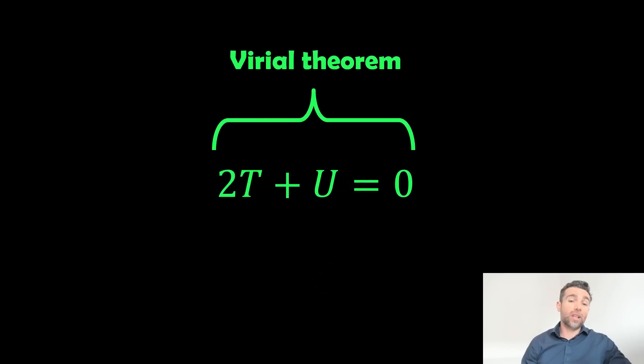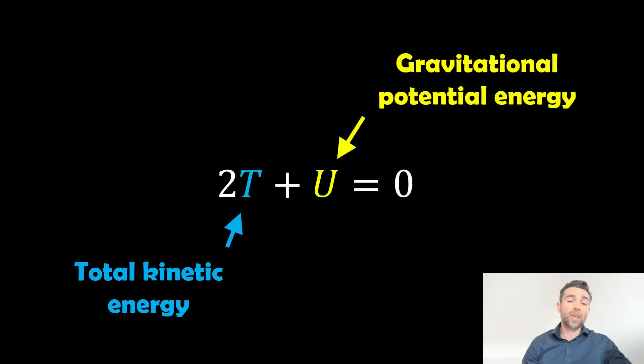So what does it look like? So the Virial Theorem is stated like this for astrophysics. So it will be two times the kinetic energy plus the gravitational potential energy is equal to zero. So that's how it would typically be written. So just to point out there, you've got your total kinetic energy of the system, so that's your T, you've then got your gravitational potential energy, that's your U there.